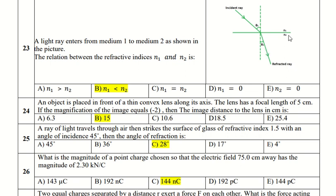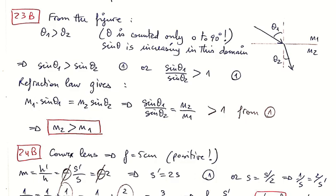We will be sure that N2 is greater than N1 from the law of refraction. The relation between the refractive indices N1 and N2 is that N1 is less than N2. We will be sure that theta 1 is greater than theta 2. Theta is counted only 0 to 90 degrees, and sine theta is increasing in this domain.